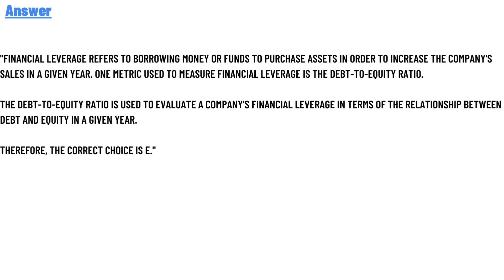The correct answer is E — financial leverage. Financial leverage refers to borrowing money or funds to purchase assets in order to increase the company's sales. The metric used to measure financial leverage is the debt-to-equity ratio, which evaluates a company's financial leverage in terms of the relationship between debt and equity in a given year. Therefore the correct choice is E.